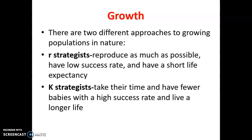K strategists, with a capital K, take the approach of longer lives and a longer time to mature. When they are able to have offspring, they don't have as many, but the ones they do have are going to be successful. These would be a lot of our mammals, birds, some amphibians, and some reptiles — our more advanced creatures that show a K strategist approach.